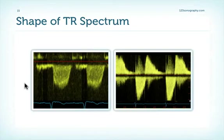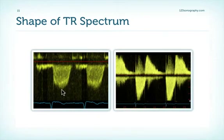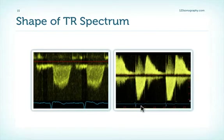What does the TR signal tell us? We can obviously quantify the severity of pulmonary hypertension by measuring the peak velocity of the signal. But the shape also gives us information. Here's an example of a patient with a normal peak maximum velocity, and here's a patient with an early peak of the signal. Such a shape is usually seen in the setting of severe tricuspid regurgitation — we have rapid pressure equilibration and the signal has a triangular shape. So if you see this, you can be quite sure that tricuspid regurgitation is severe.